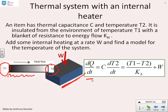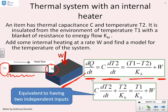Here's the equations. The rate of change of energy stored in the block is C times dT2/dt. I've got some energy coming from the environment, T1 minus T2 over KH, and I'm also going to add the direct heating from W.